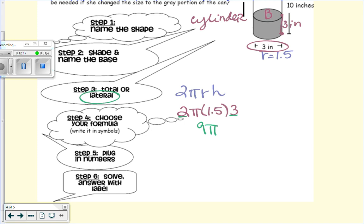So our lateral surface area is about 28.27 inches squared. So this is the amount of the area of the cardboard that's going to be wrapped around a Pringles can. We're good with that? Yes.